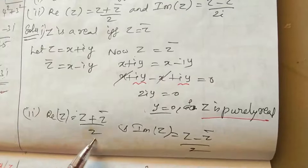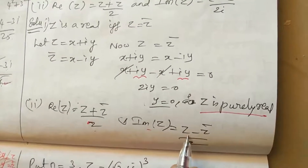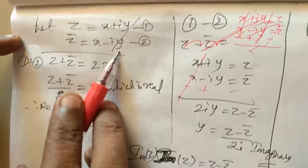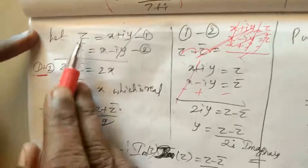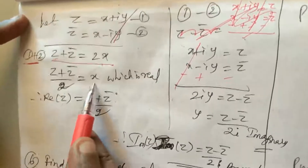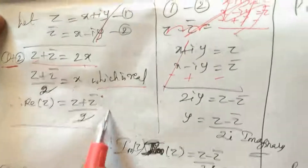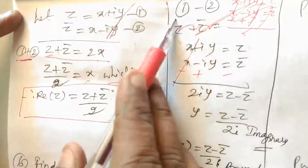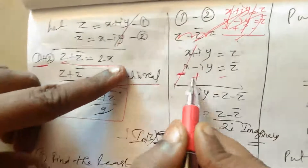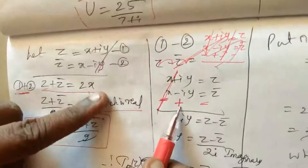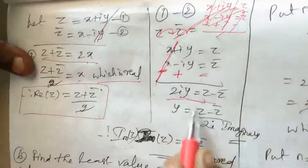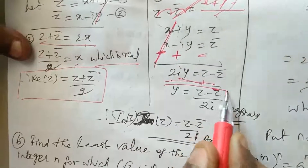For the second and third properties: the real part of Z equals (Z plus Z bar) divided by 2, and the imaginary part of Z equals (Z minus Z bar) divided by 2i. When we add Z and Z bar, the imaginary parts cancel giving the real part; when we subtract, the sign changes give us the imaginary part. Thus both properties are proved.